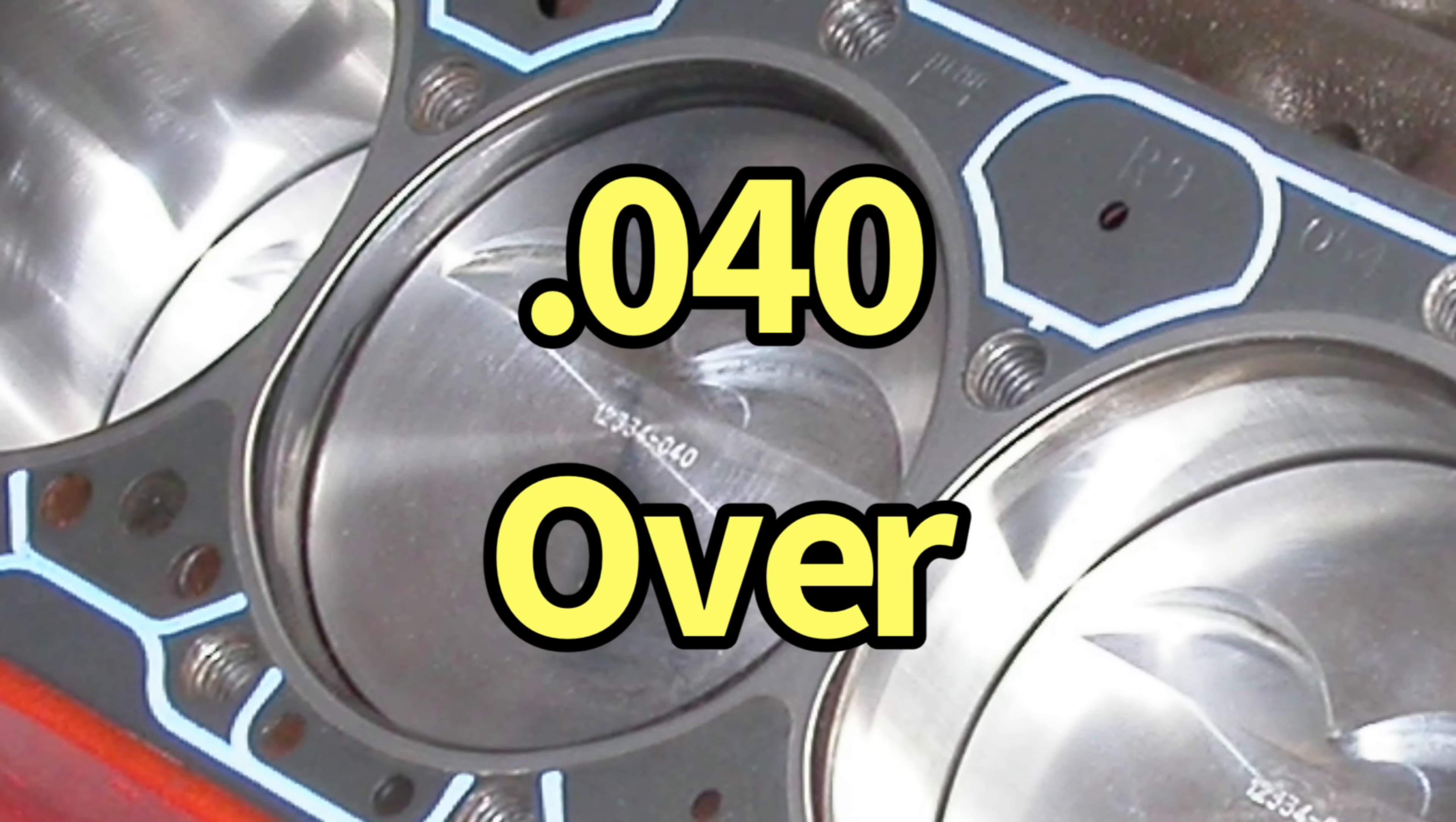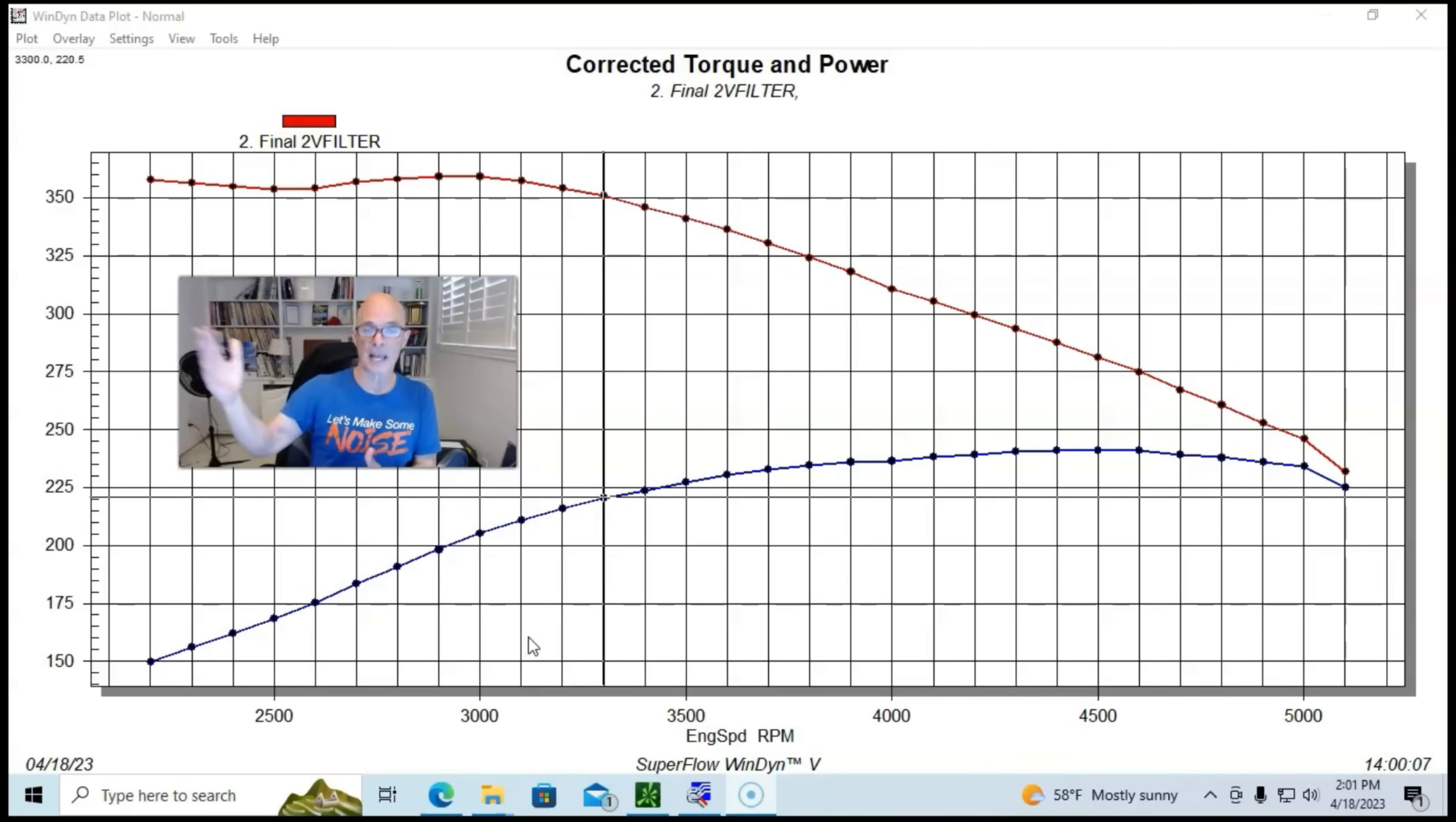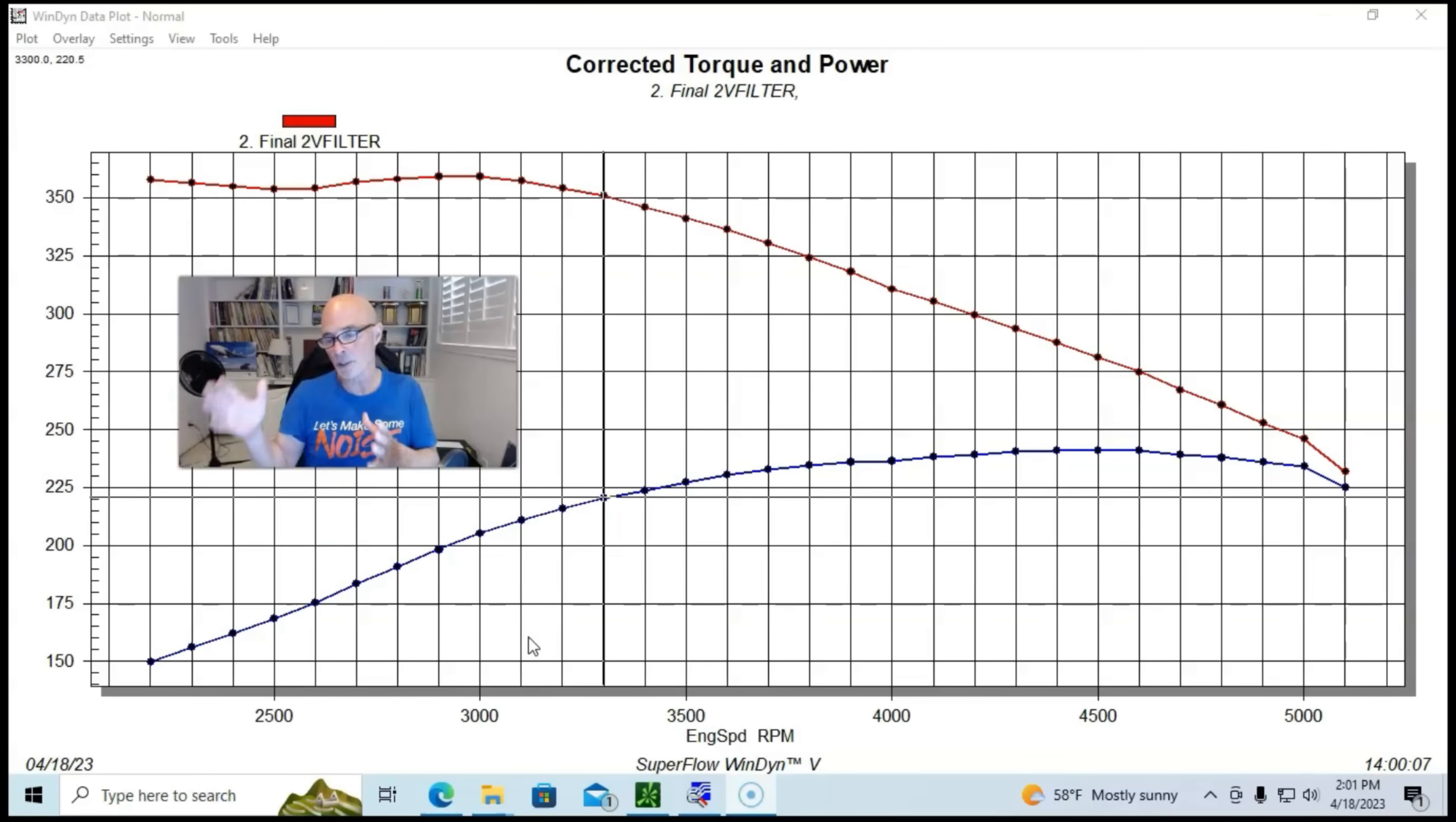Our 350 started out as a rebuild, so it was 30 over. We put a forged flat top piston in it with valve reliefs, which would allow us later on to run lots of camshaft and different cylinder heads on this combination. It helped our compression a little bit.